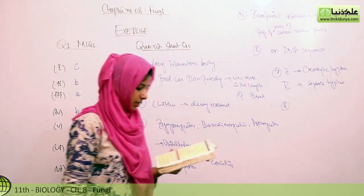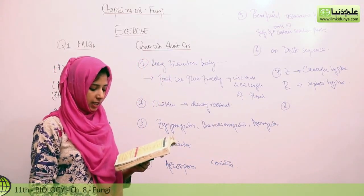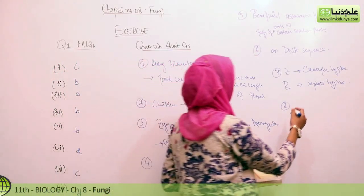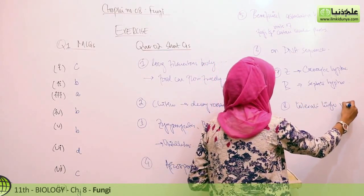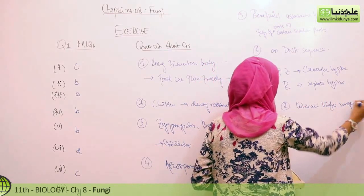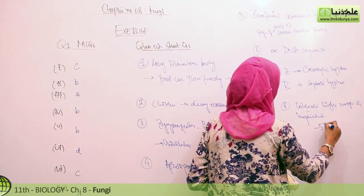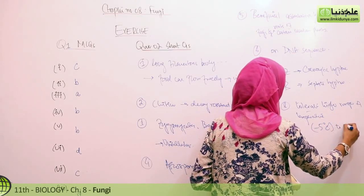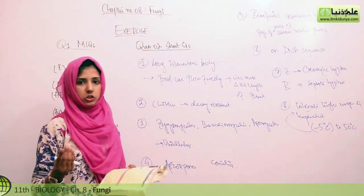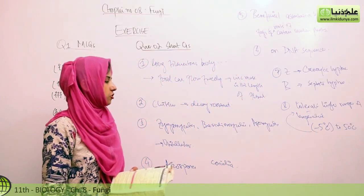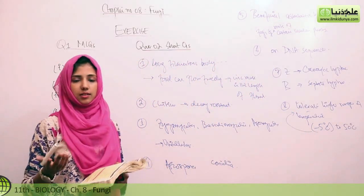Eighth question, why is green mold likely to contaminate an orange kept in our refrigerator than bacteria? Because they can tolerate high range of temperature. Ye baat humne pehle bhi discuss ki thi that they can tolerate minus 5 degree Celsius to 50 degree Celsius. So ye minus 5 degree Celsius jo fridge mein to hota hai, jo freezer nahi hai temperature. So it can cause the deterioration of the orange or anything that is kept in the fridge.